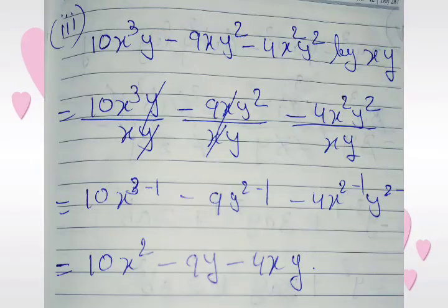Sub-part 3: 10x cubed y minus 5xy squared minus 4x squared y squared divided by xy. We divide each term by xy. 10x cubed y ÷ xy gives 10x squared; minus 5xy squared ÷ xy gives minus 5y; and minus 4x squared y squared ÷ xy gives minus 4xy. The final answer is 10x squared minus 5y minus 4xy.